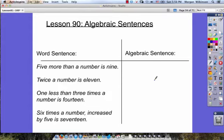In lesson 90 today we're talking about algebraic sentences. Now we've seen a lesson like this before, but the difference between this lesson and the one we've seen is that we're going to have algebraic sentences rather than phrases, meaning we'll have an equal sign in our problem as well.